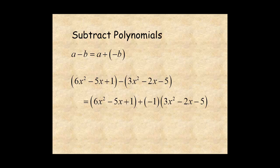So, to find the inverse of the second polynomial, multiply by negative 1, which is the same as changing the sign of each of its terms. So, the second polynomial is rewritten as negative 3x squared plus 2x plus 5.